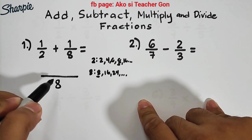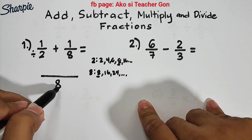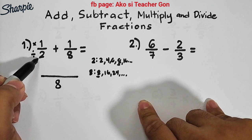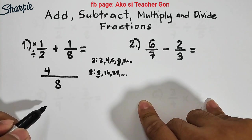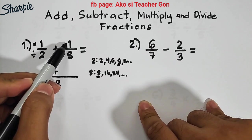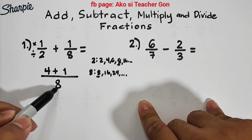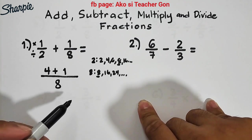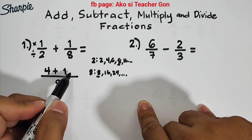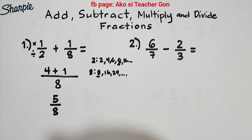What's next is this common denominator needs to be divided by the original denominator. 8 divided by 2 equals 4, then multiply: 4 times 1 equals 4. Plus, 8 divided by 8 equals 1 times 1 equals 1. Let me repeat the process: divide this LCD by your original denominators, then multiply it by the numerator. So we have 4 plus 1 over 8 and we need to simplify this.